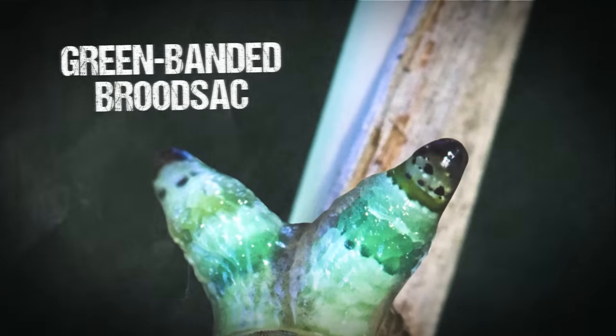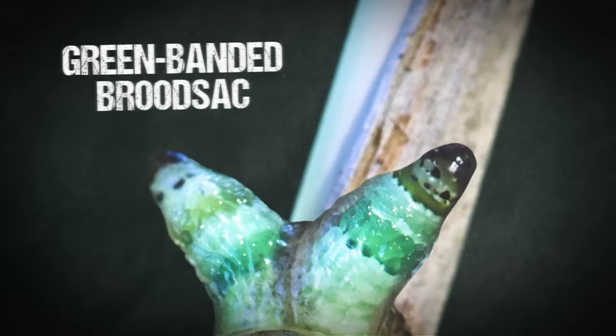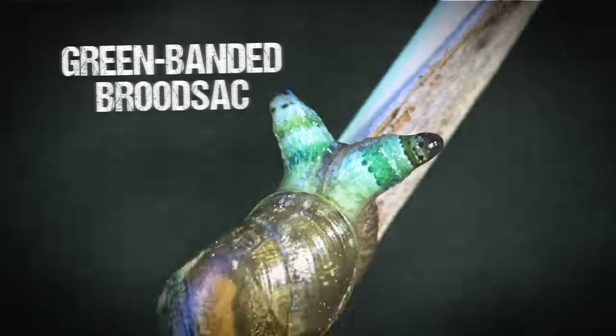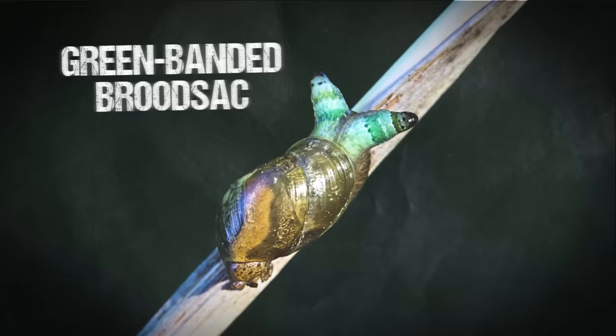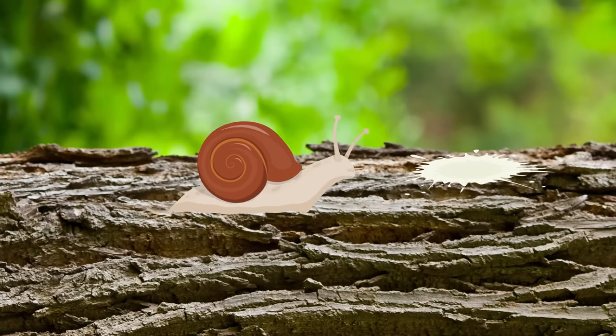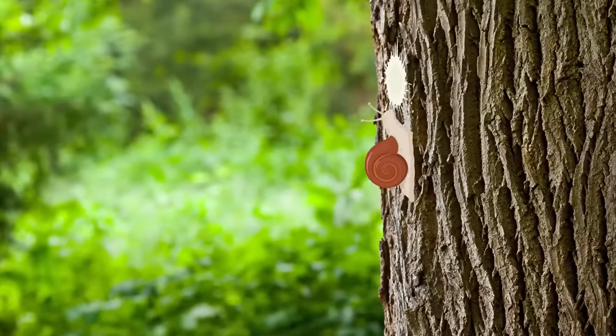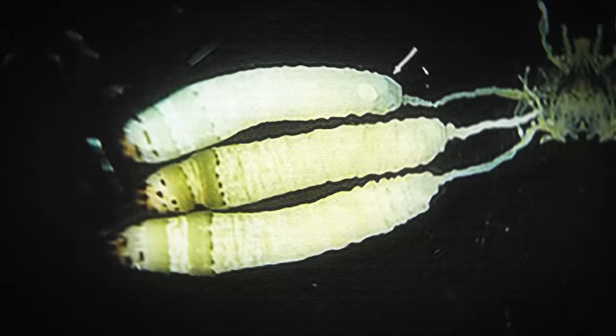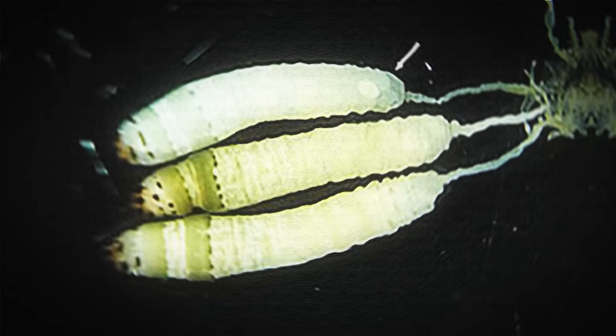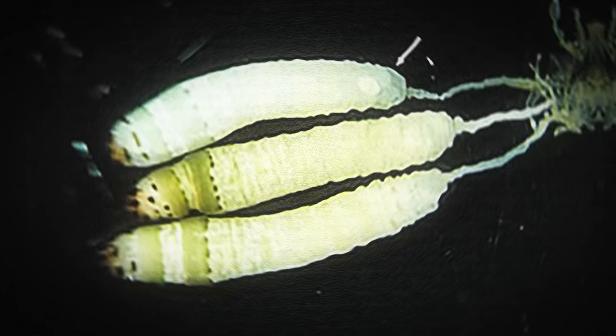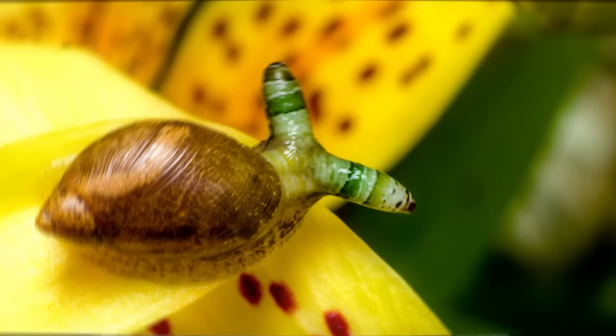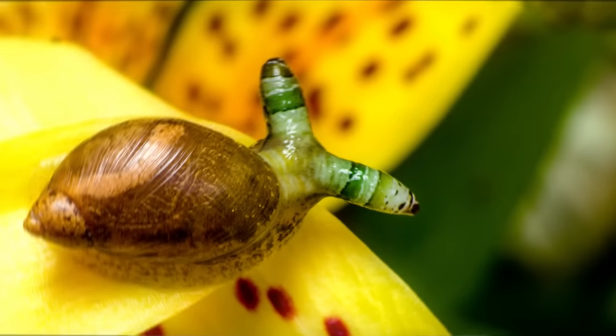The green-banded brood sack uses similar poo-based tactics, although this time it's a species of snail that eats the bird's feces. Now it's well known that snails are absolutely terrible at the Macarena, so the brood sack has yet another way of attracting the interest of the local bird population. It grows directly into the snail's eye stalks.